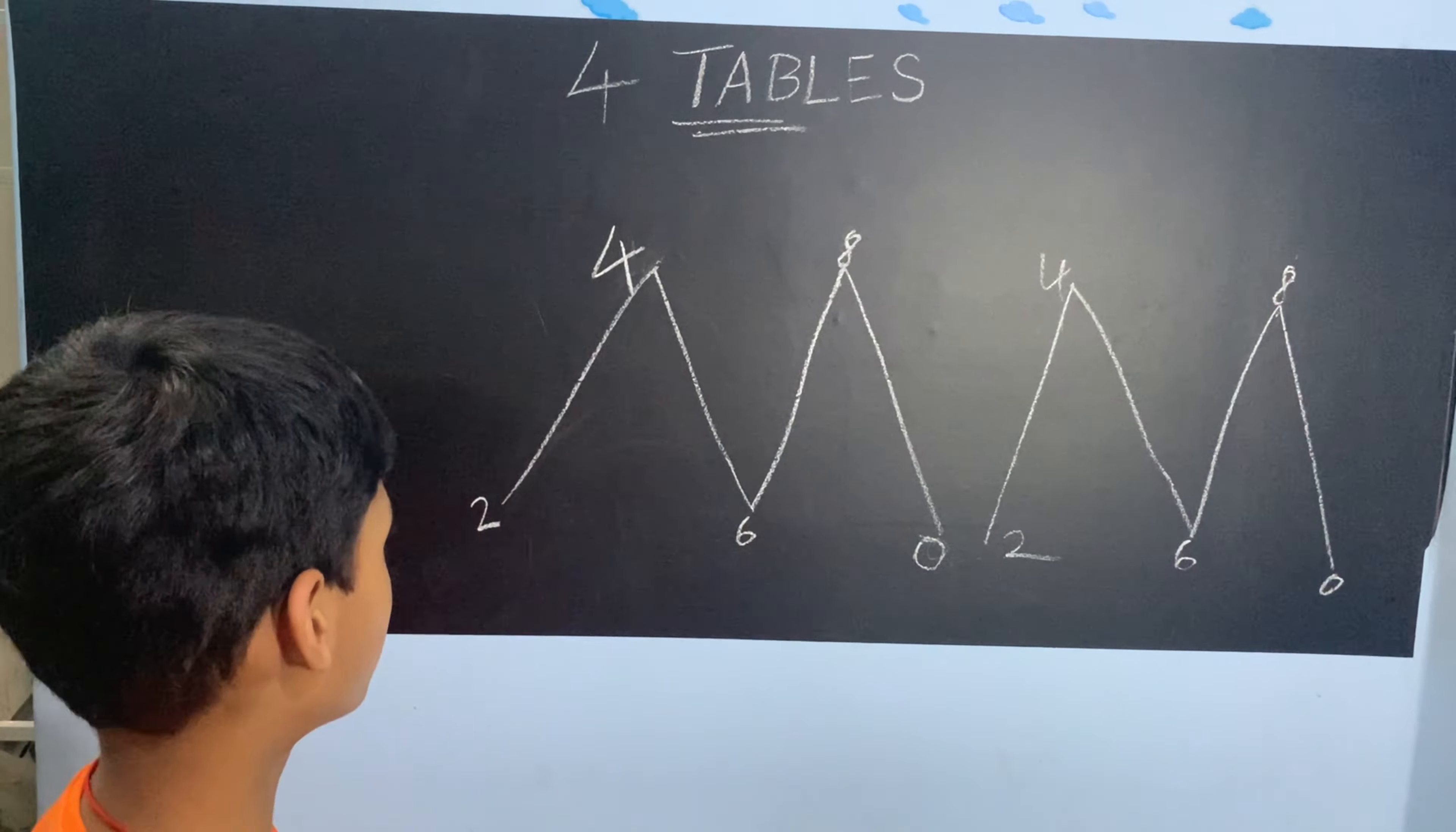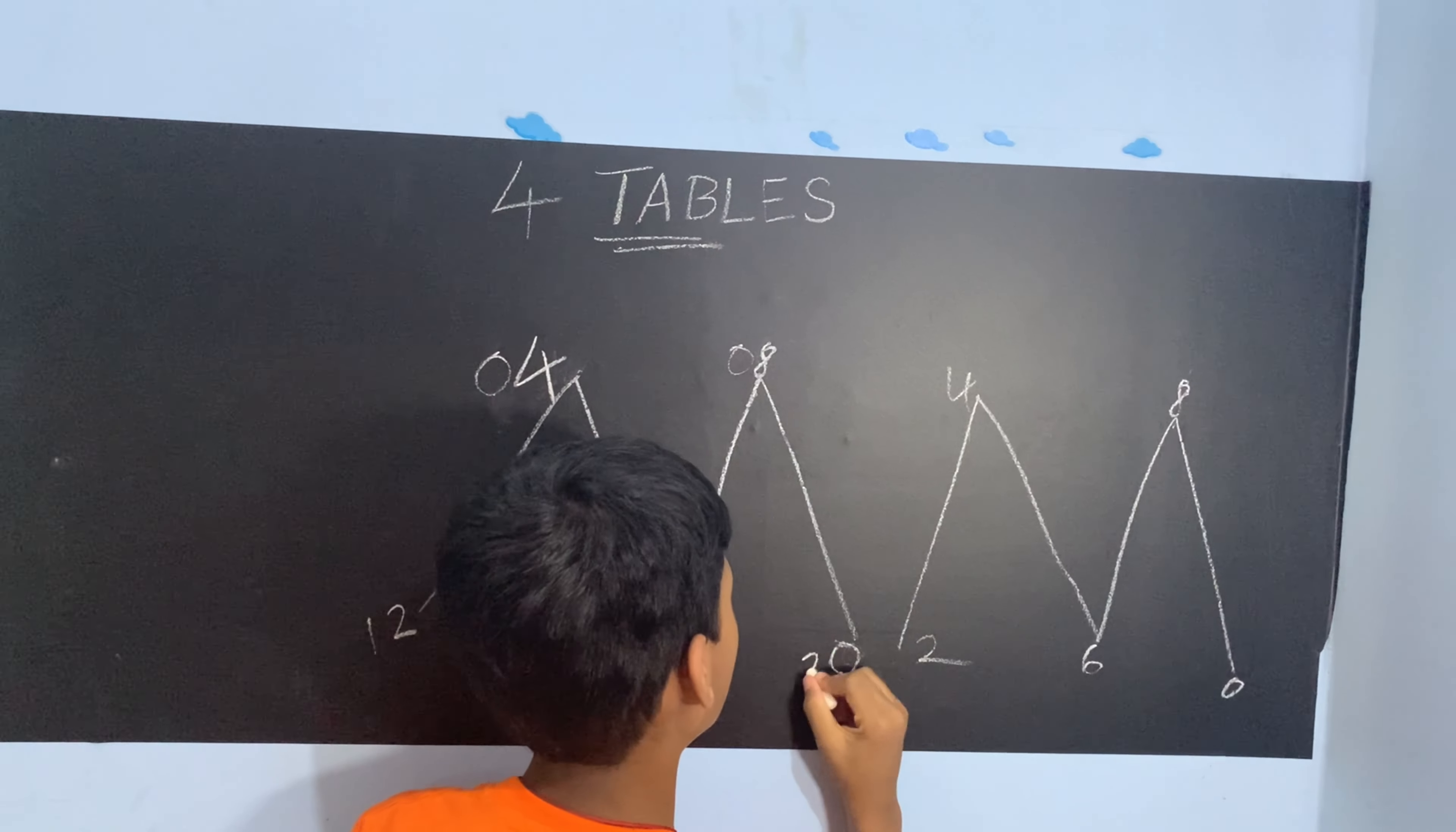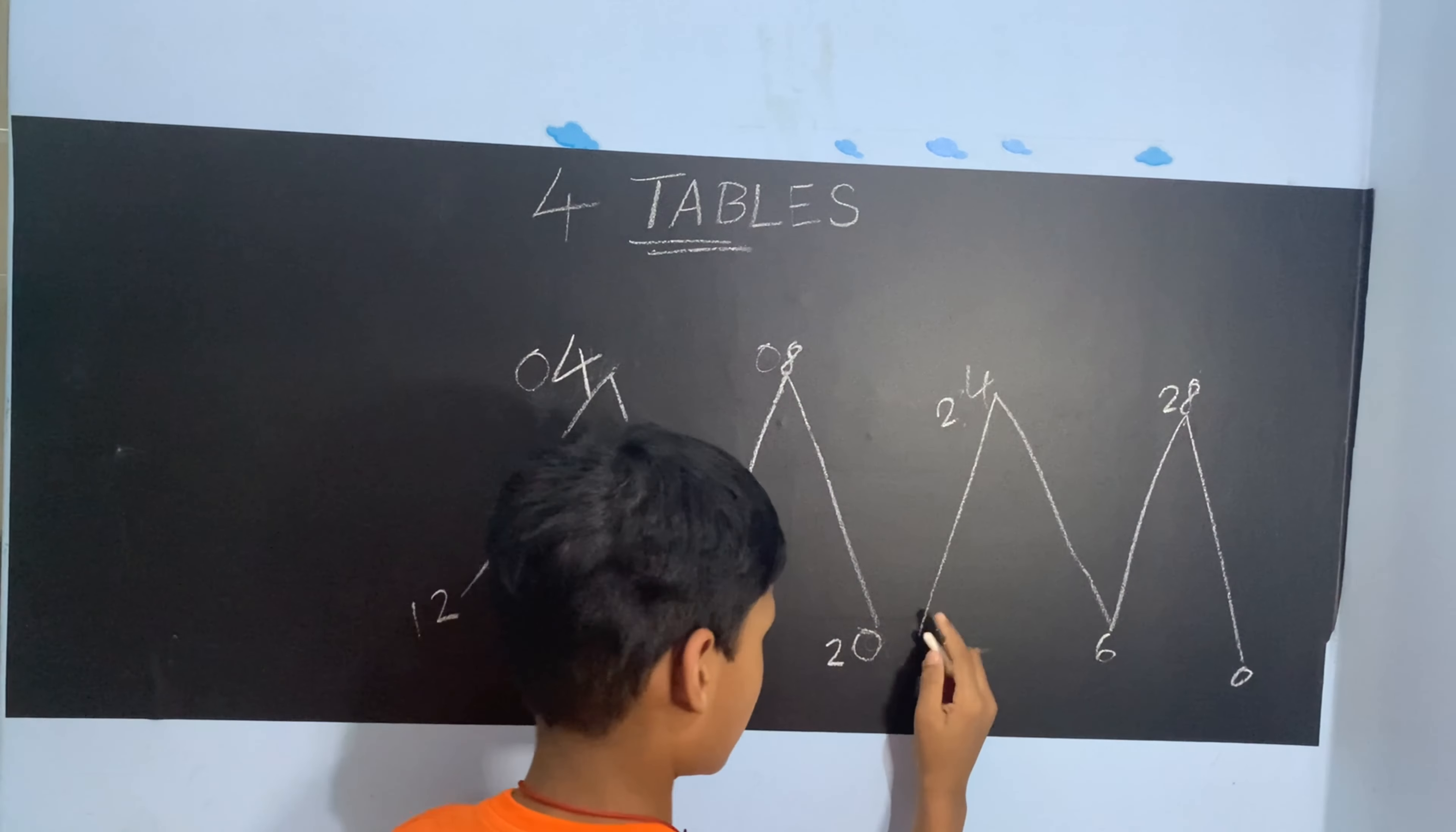We are going to label the points. One times four is going to be 4. Two times four is going to be 8. Three times four is going to be 12.